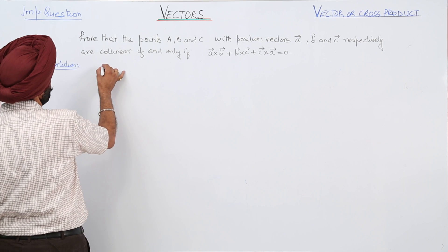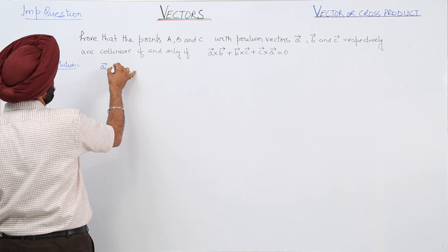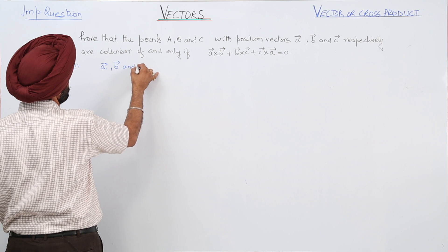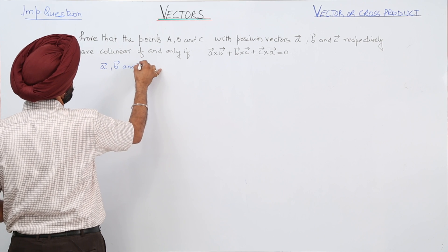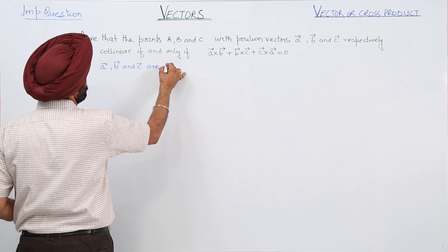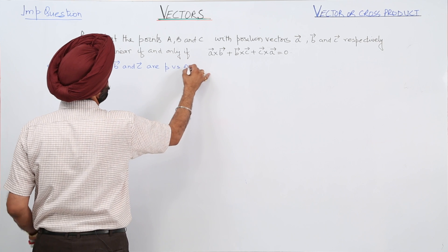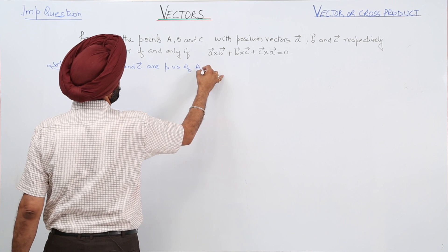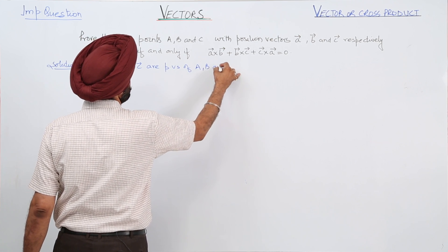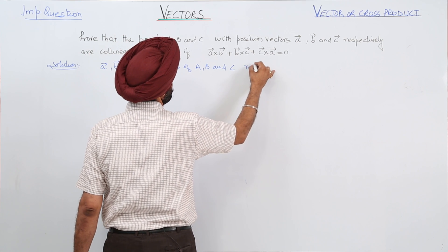Vector A, vector B and vector C are position vectors of A, B and C respectively.